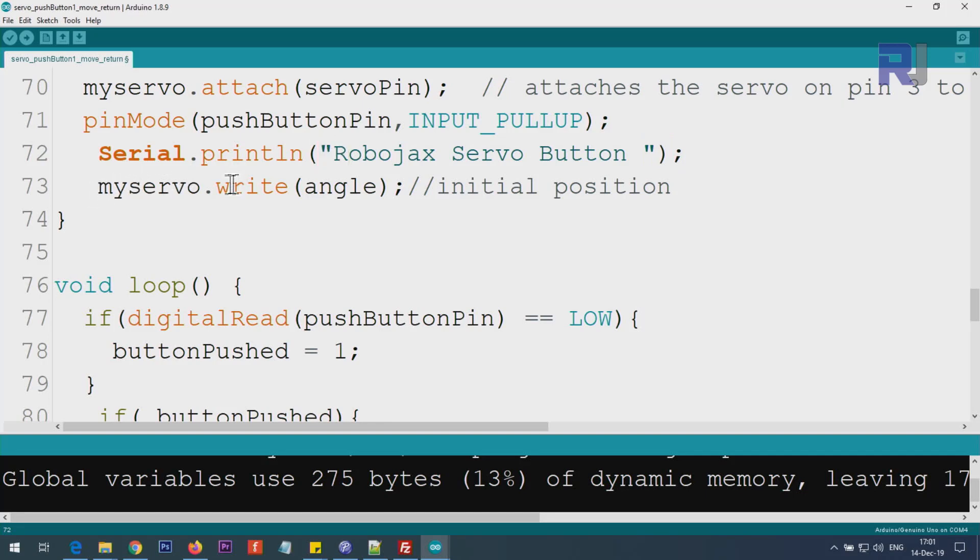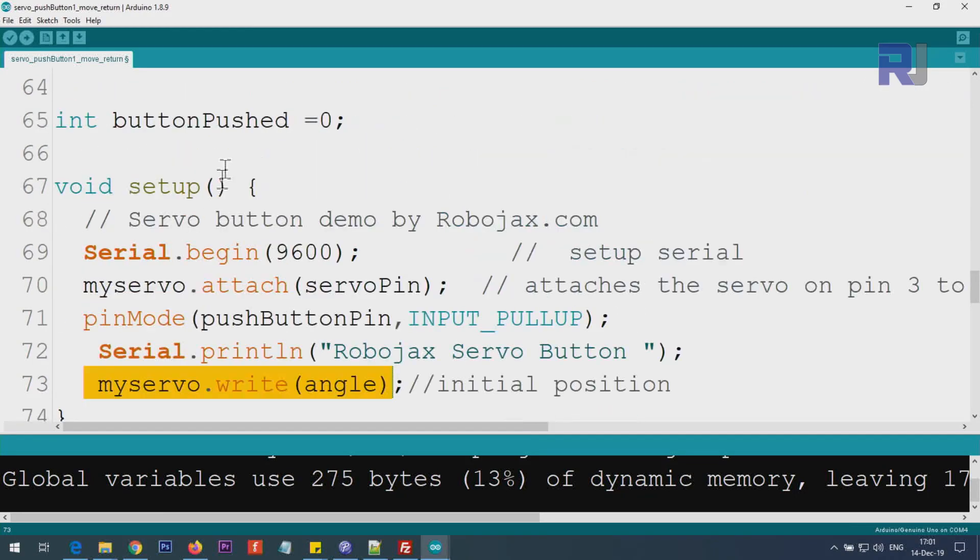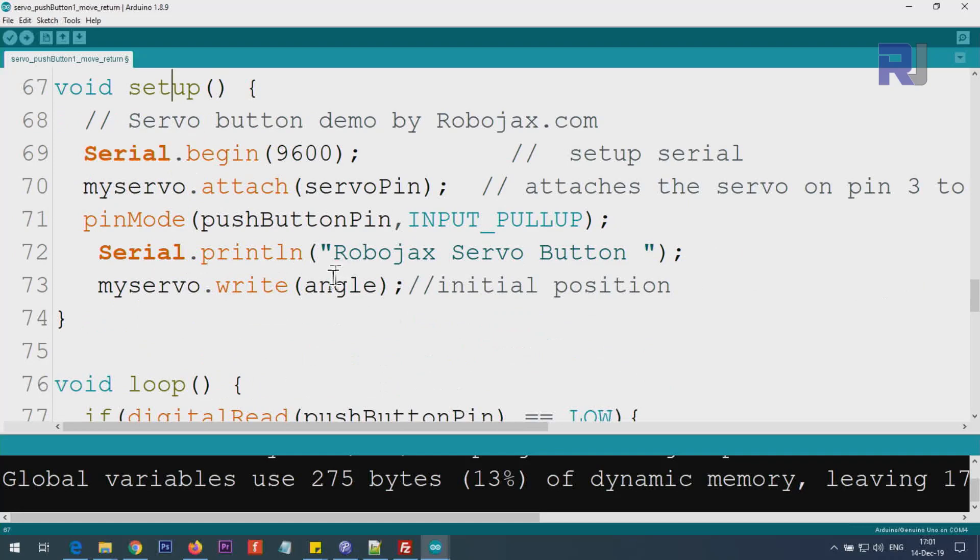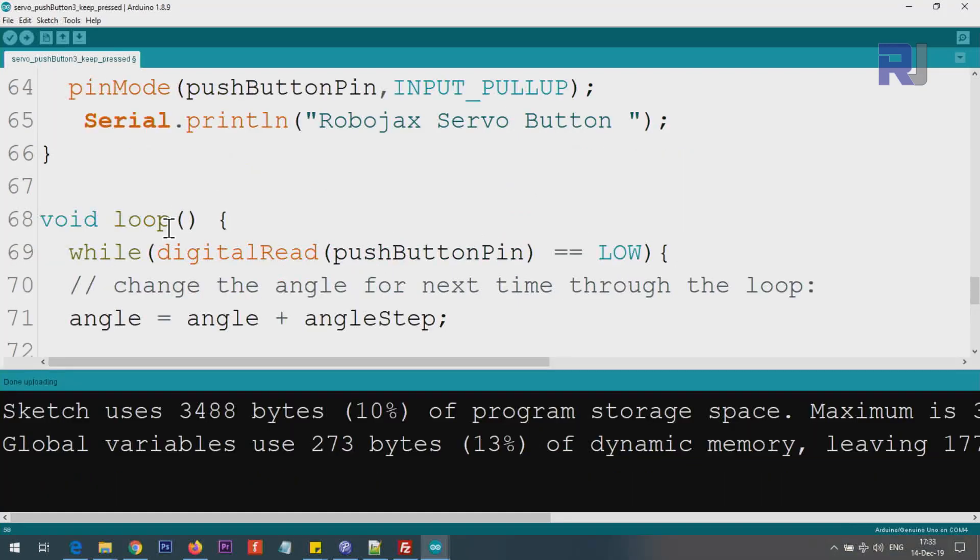And then Serial.print—this just prints a text, you see the double quotation, so this is our text. And then myservo.write(angle)—you can put a value here and the servo moves to that location. Because this is inside the setup, this is our initial position of the servo. If you want to put any other value or something, just put here. The servo will be initially at that location.